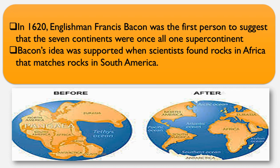Before we go through this, let me tell you something that was a surprise for me too. In 1620, an Englishman, Francis Bacon, was a scientist who was the first person to assume that the seven continents we know right now were all together — connected in something called the supercontinent. That is how the seven continents looked at the beginning, and then after years passed they started to separate into the seven continents we have right now.